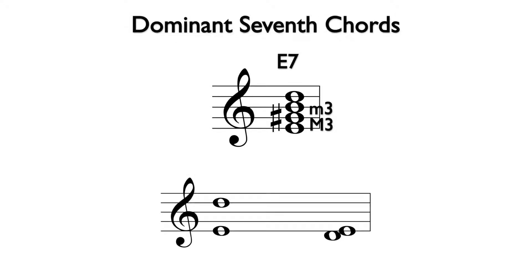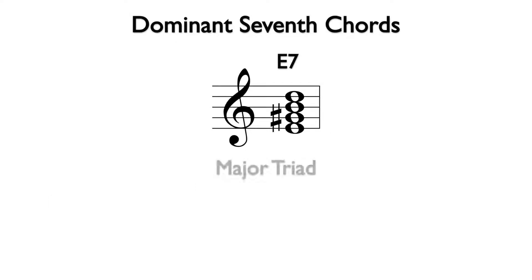If we bring the D down an octave, we can see that D to E is a major second, which inverts to a minor seventh. So here we have a major triad with a minor seventh, or an E dominant seventh chord.